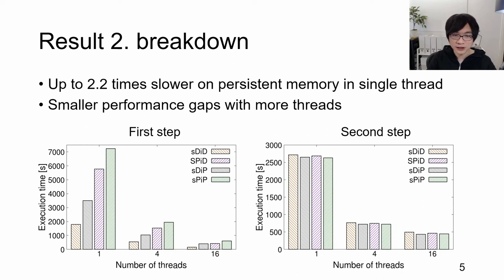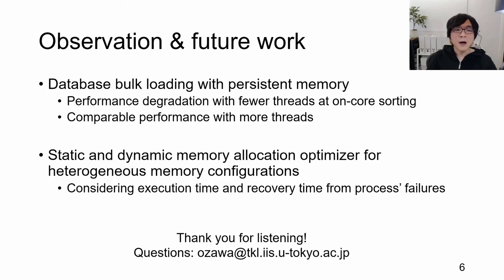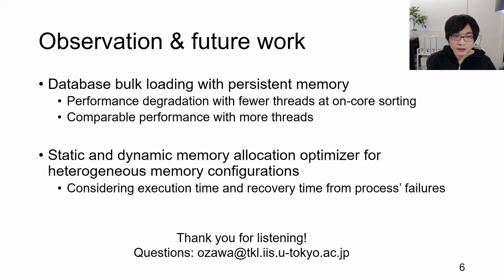This is because of the complexity of in-core sorting compared to sorted-run merging. The sorted-run merging just reads records sequentially in the intermediate space. Our experience showed larger performance degradation in single-threaded bulk loading at in-core sorting, but comparable performance with more threads. This indicates that persistent memory can be used in an intensively multi-threaded environment instead of DRAM for database bulk loading, as cheaper memory and as faster secondary storage.